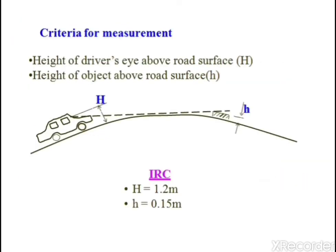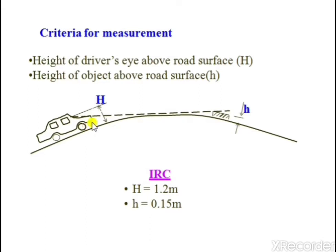For the criteria for measurement of stopping sight distance, consider a vertical curve of radius R with a car moving along the road surface and an object of height x ahead. A driver can see the object when the line of sight is 1.2 meters and object height is 0.15 meters. Only when this condition is satisfied can the driver apply brakes and stop without collision. These values are used in designing highways.